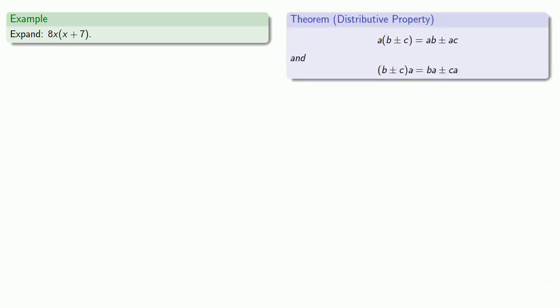So let's try that out. We have 8x times quantity (x plus 7), and the directions say to expand. What that means is we'll want to go from a product into a sum. Our distributive property says that if I have something times something plus something, then I can multiply each of our sum ends by the outside factor.